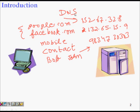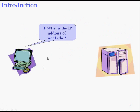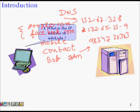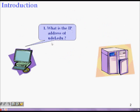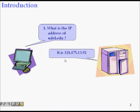For example, if you ask what is the IP address of udl.edu, the name server replies that it is 128.175.13.92. So when you type www.udl.edu, at the IP layer it needs to know the IP address, which comes from the DNS server, and it will then fetch you the web page.